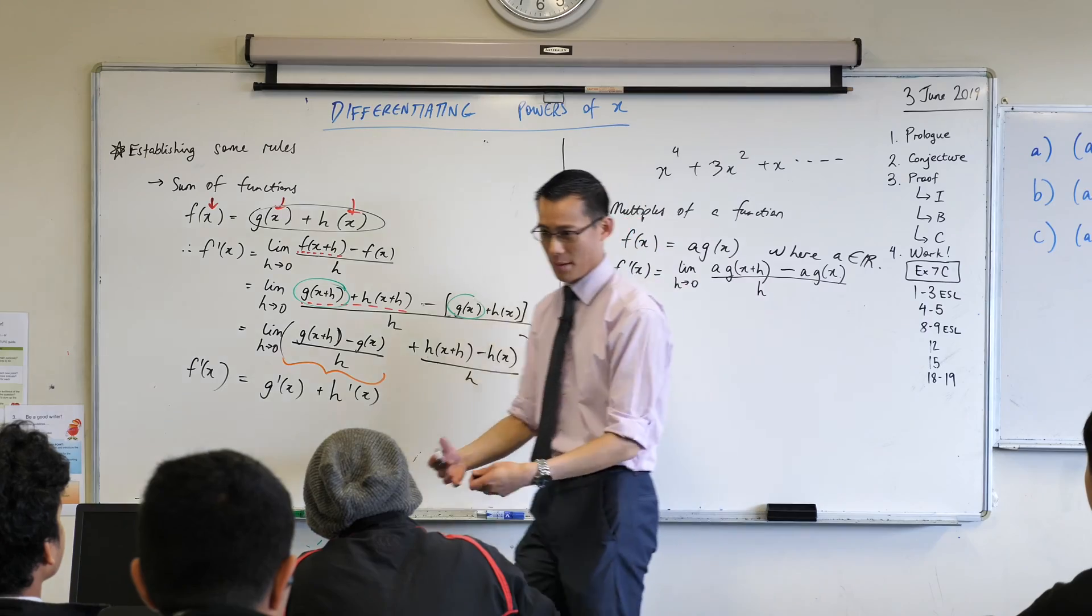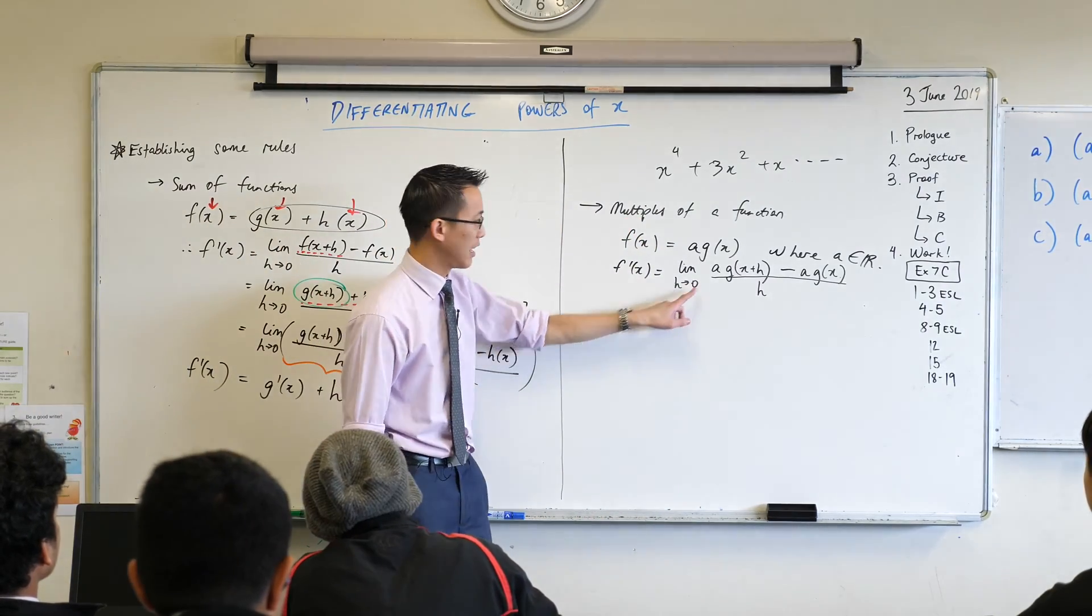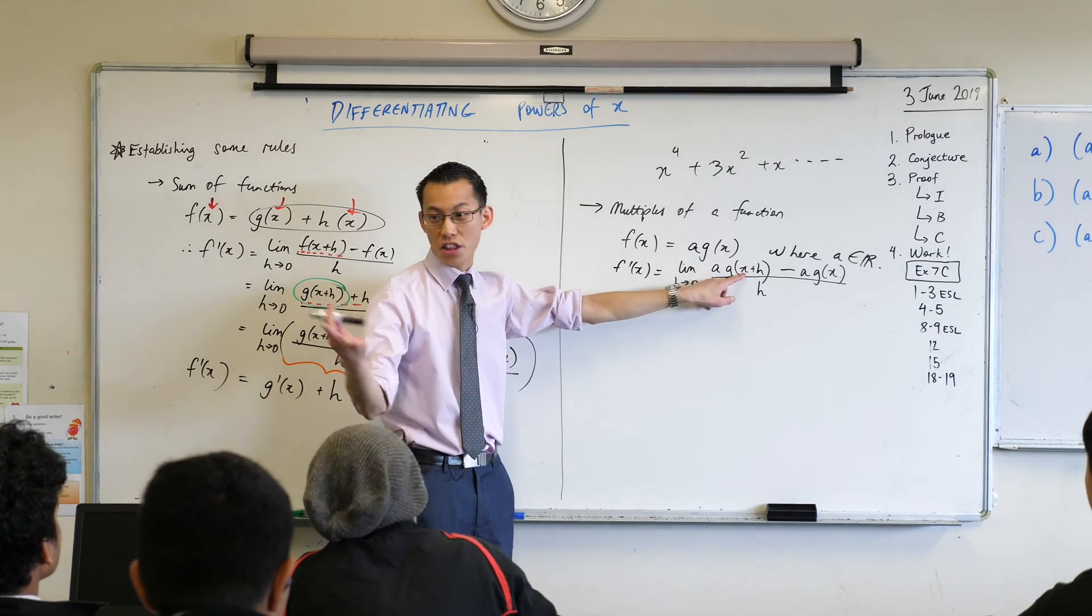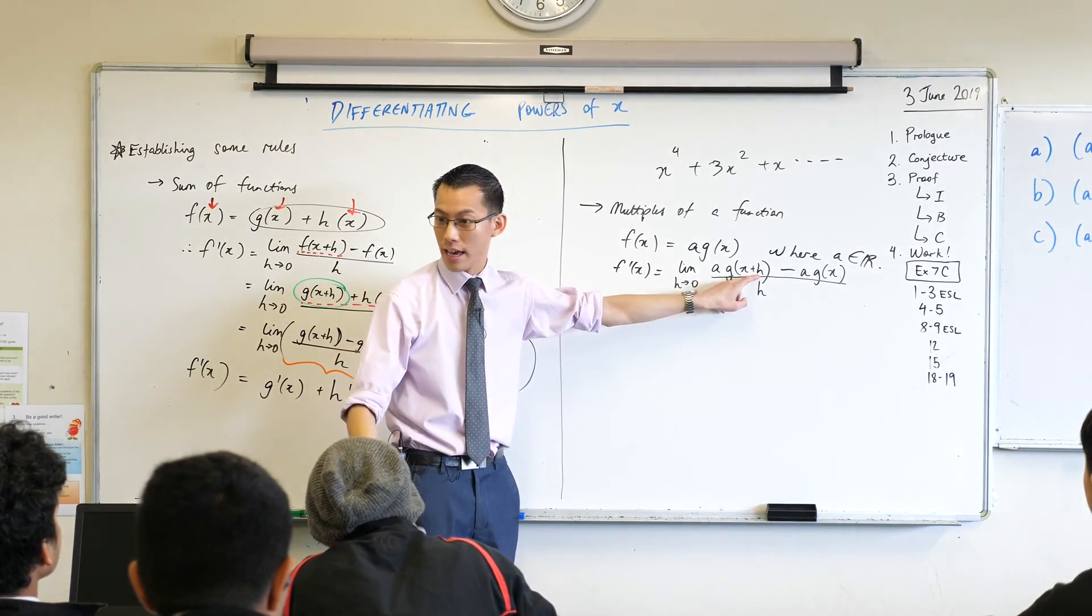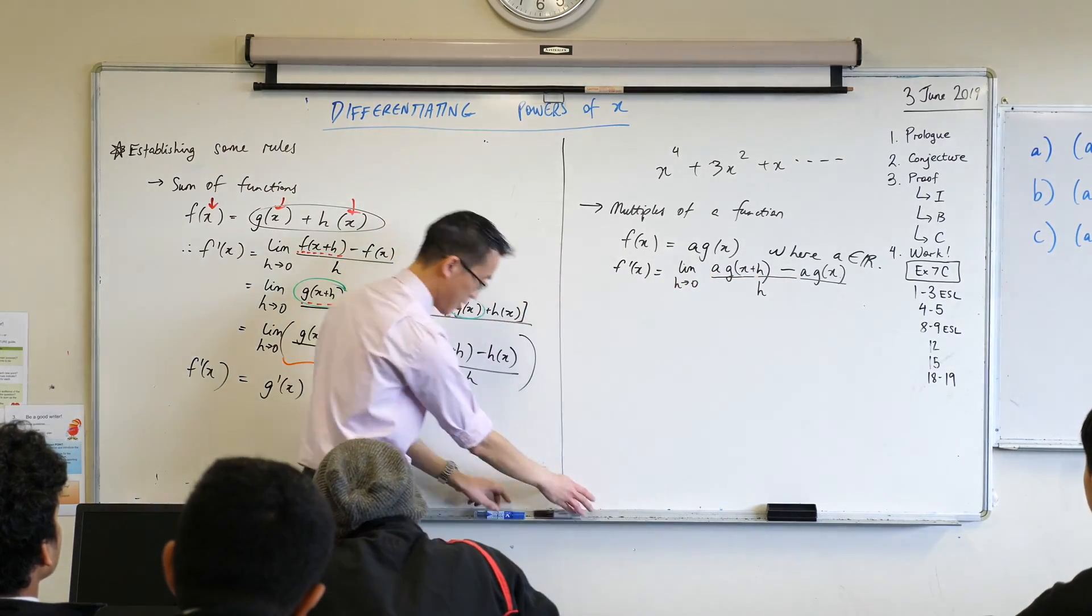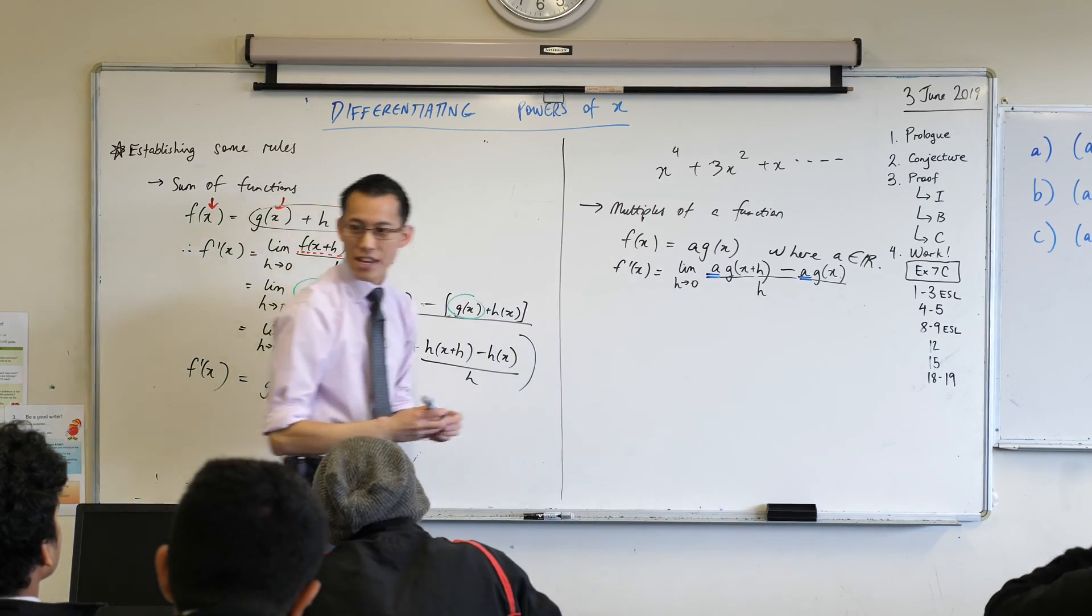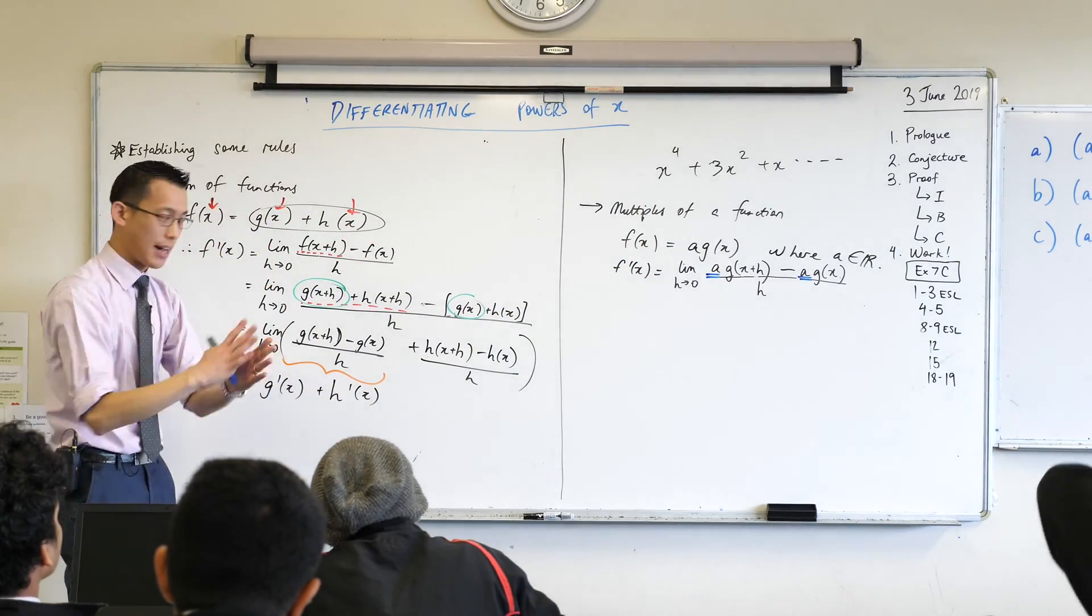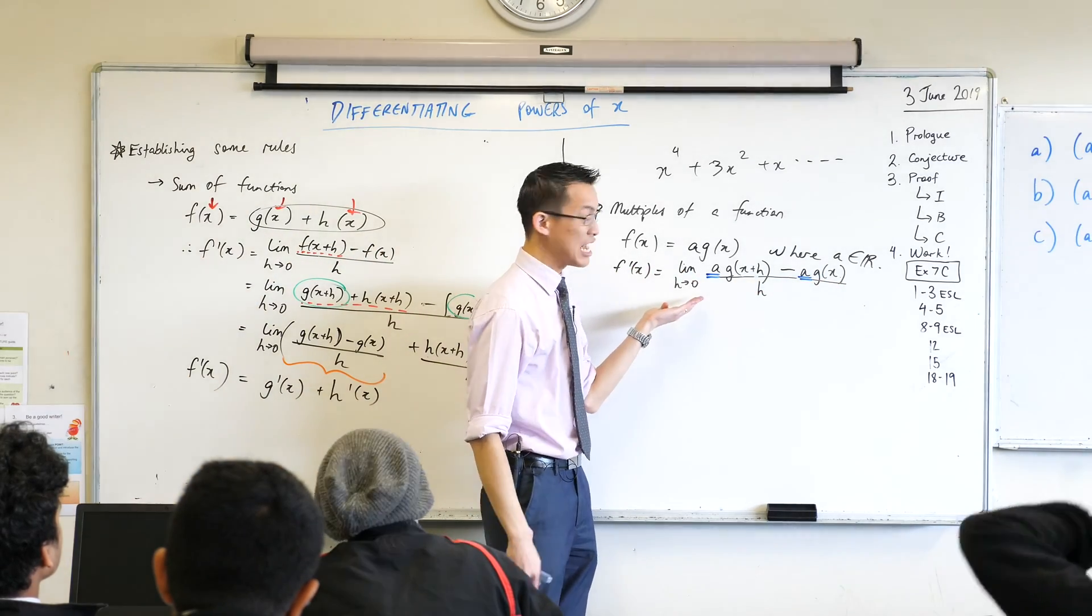Now, remember how when we thought about these limits, we noticed that some things didn't care about what h was. You're like, what happens to this x? Nothing. x is still x. He doesn't care about h. But this guy, this does care, right? So it changes value. Now I'm going to ask this question again. Look at these two guys here. I'll highlight it for you. When h changes, as it gets teeny, teeny, tiny, right? What happens to a?